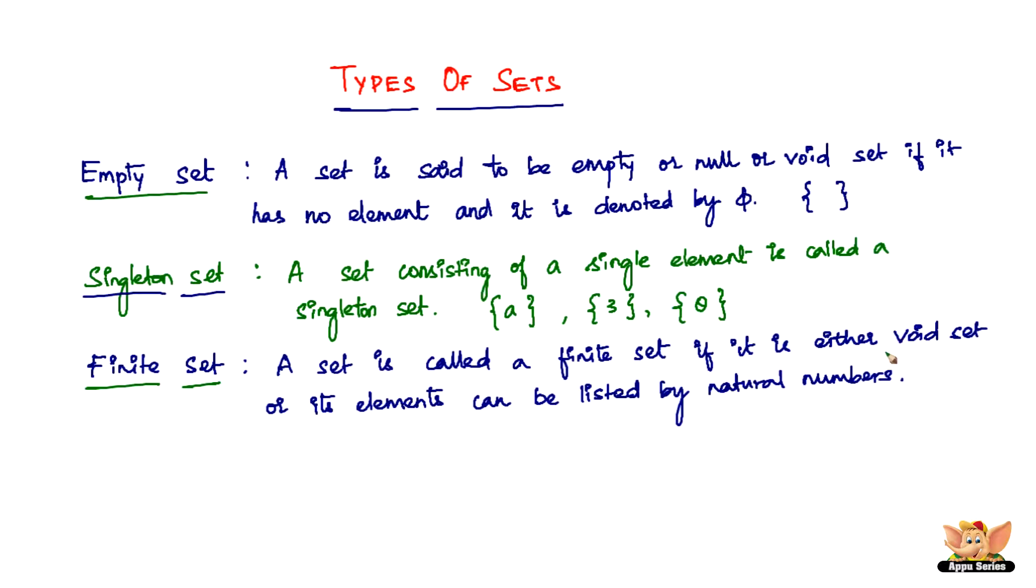So why is a void set or a null set or empty set a finite set? Because you know for sure there are zero number of elements in it. A singleton set is also a finite set because you know for sure there's just one element in it. You can definitely count. Now, say for example, another example for a finite set can be 1, 2, 3. So there are just three elements in that set. You can count the number of elements in the set by natural number. So that is why it's called as a finite set.